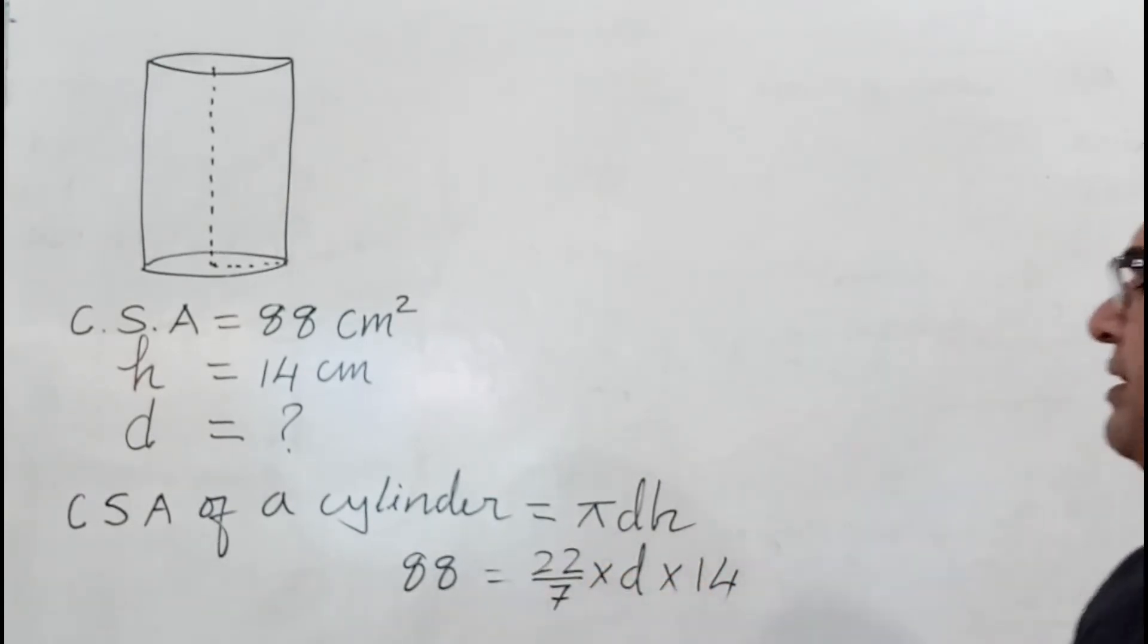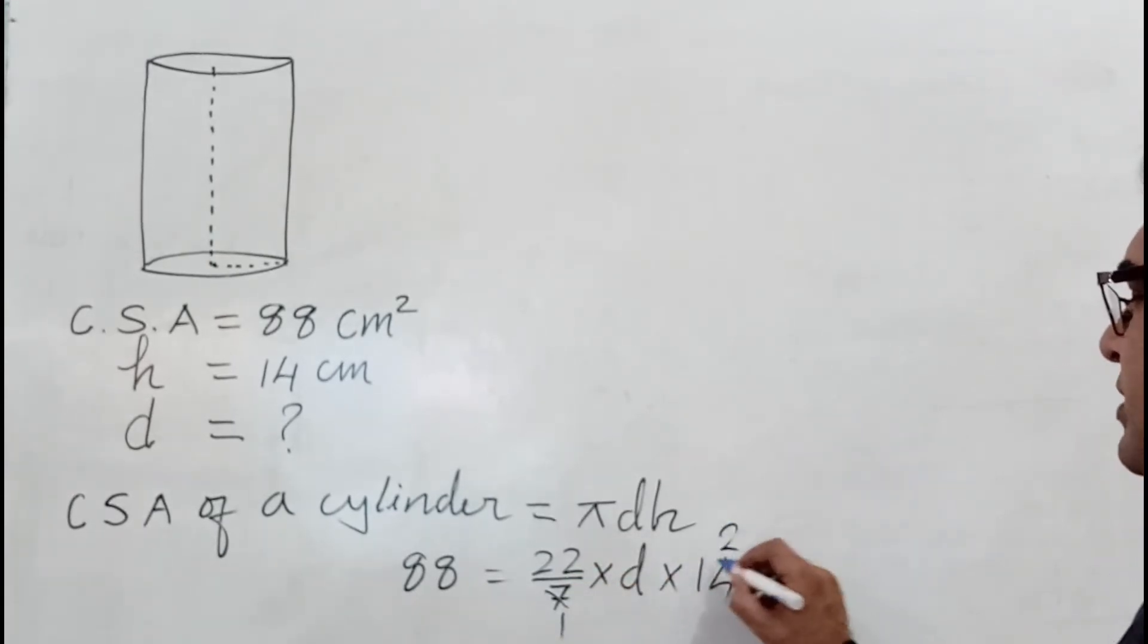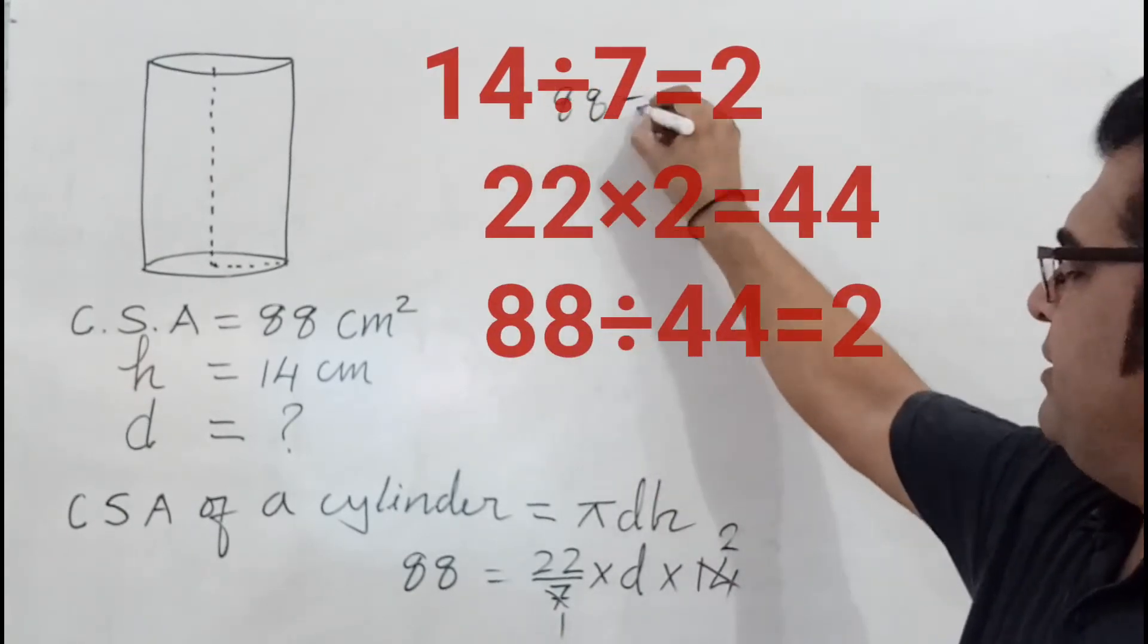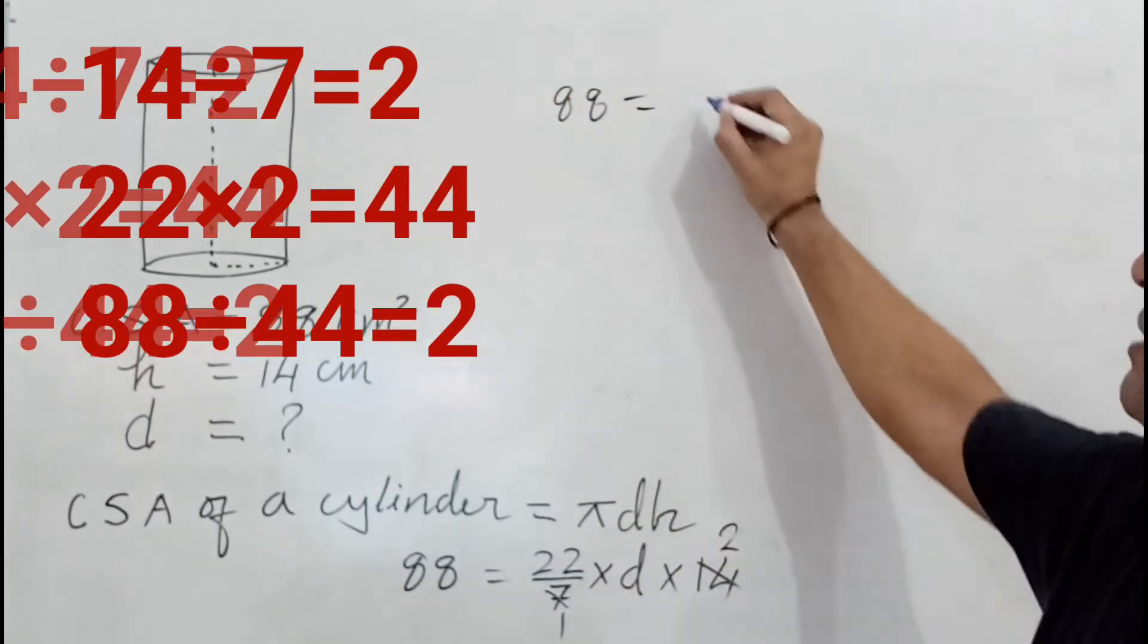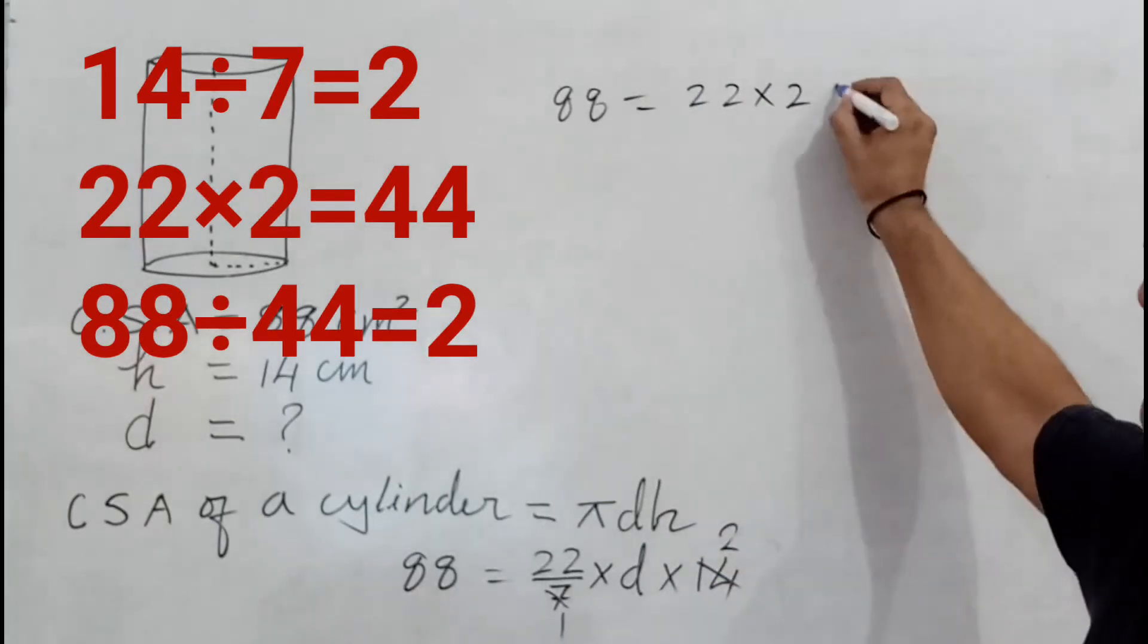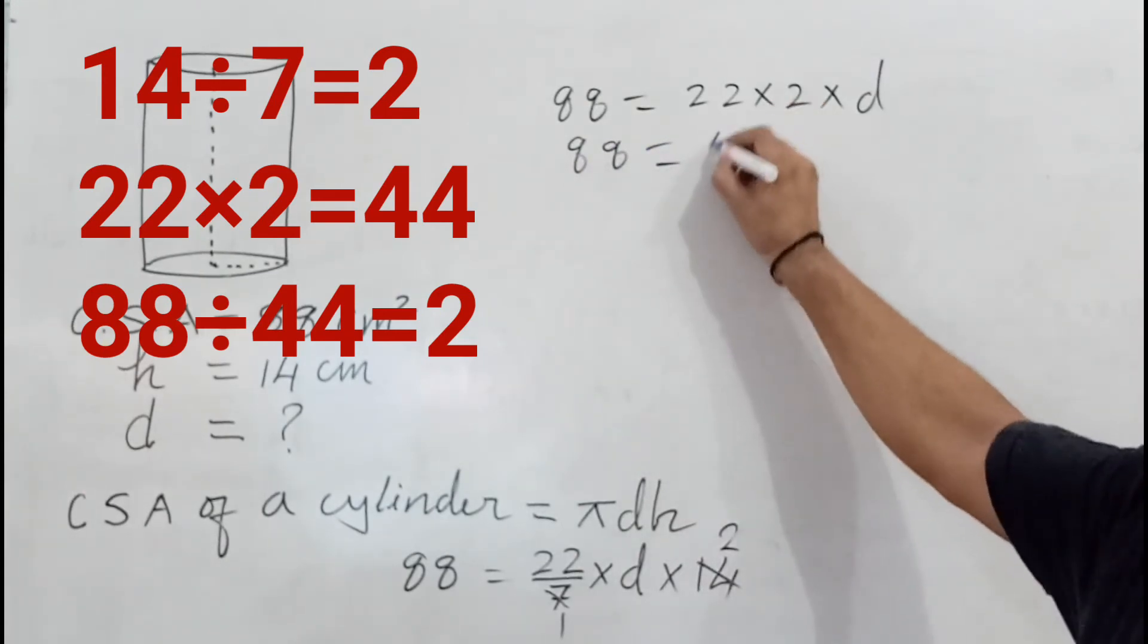So 88 equals 22 multiplied by 2 multiplied by diameter. That gives us 88 equals 44 multiplied by d.